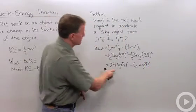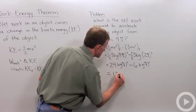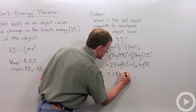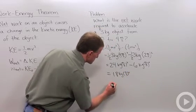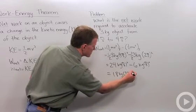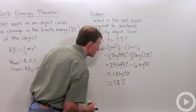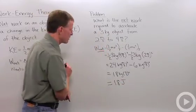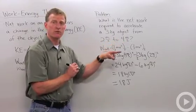And if I subtract 6 from 24, I get 18, and this unit here kilograms meters per second squared equals 18 joules of energy. So that is my net work that is required to accelerate that object from 2 meters per second to 4 meters per second.